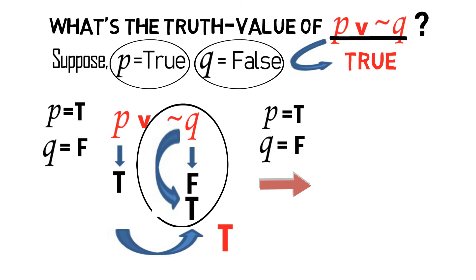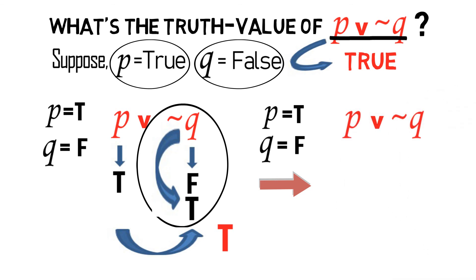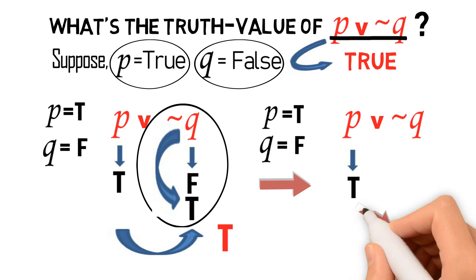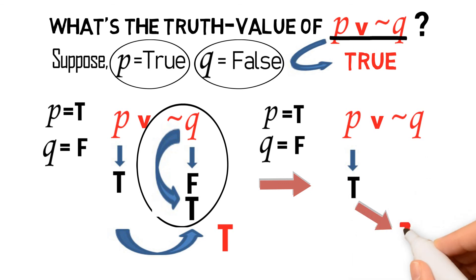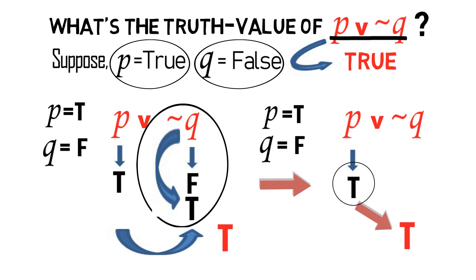Alternatively, we can determine the truth value of the inclusive disjunction P or not Q in the following manner. If we assign the truth value true for P, then we can conclude right away that the inclusive disjunction is true, because one of the disjuncts is already true. The rule in inclusive disjunction says an inclusive disjunction is true if at least one of the disjuncts is true.